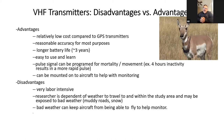VHF transmitters are generally easy to learn to use with practice. The pulse signal can be programmed to activate at different hours and to detect animal movement or inactivity. After four hours of inactivity, for example, the transmitter can switch to a faster 'mortality pulse' — perhaps from one beep per second to two beeps per second — signaling a possible mortality event. VHF transmitters can be used with handheld, vehicle-mounted, or aircraft-mounted receivers.